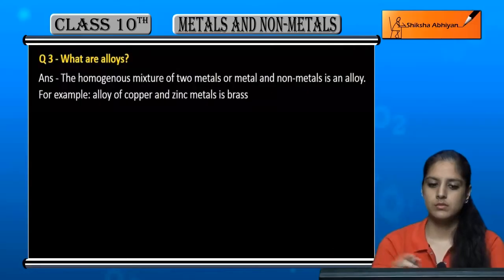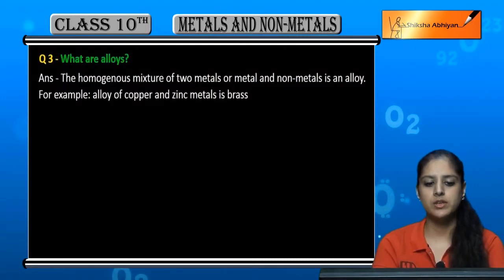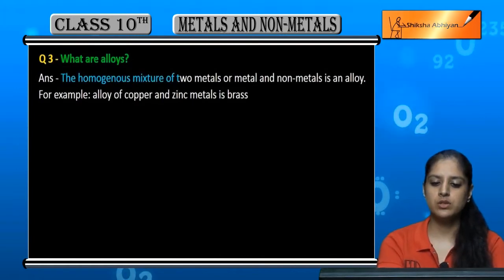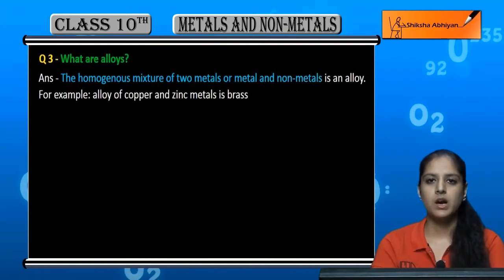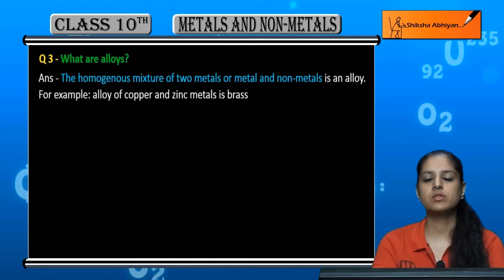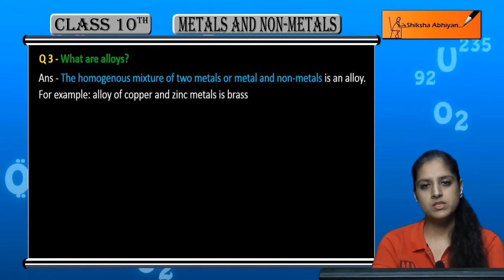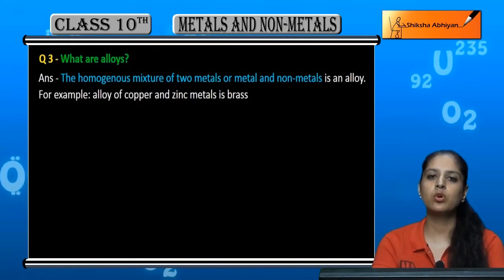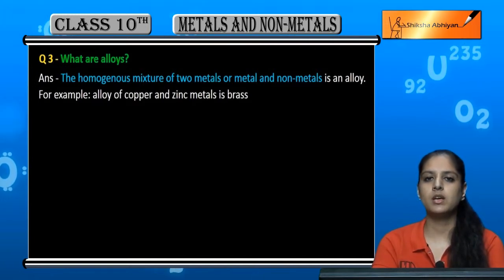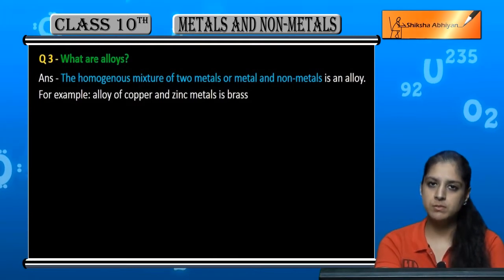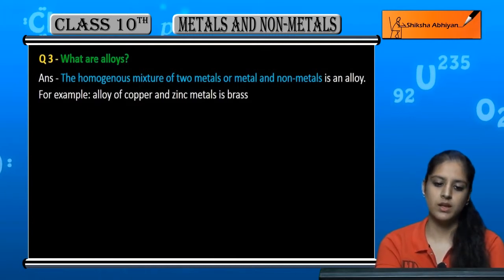Question 3: What are alloys? Alloys are the homogeneous mixtures of two or more metals, or a metal and a non-metal. If we take one metal or two or three other metals and make it a homogeneous mixture, it will be an alloy. It is a homogeneous mixture that can use only metals and non-metal combinations.